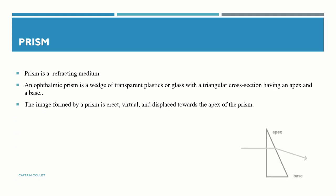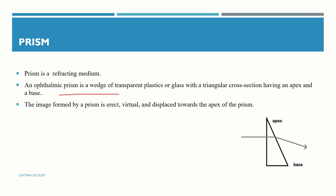A prism is a refracting medium. An ophthalmic prism is a wedge of transparent plastic or glass with a triangular cross section, having an apex and a base.